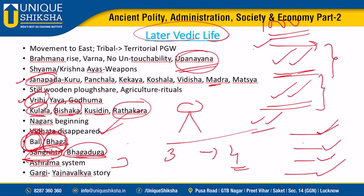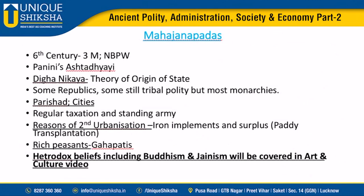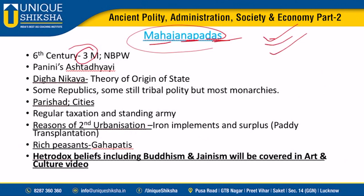Janapadas developed into full-fledged states with centralized power in the sixth century BC. Three M's emerged - monks, monarchs, and merchants. Merchants gave the second urbanization after the Indus Valley Civilization. Mahajanapadas emerged from earlier tribal localities and expanded their domains through warfare, diplomacy, and marriage alliances. Panini's Ashtadhyayi gives knowledge about this time period of Mahajanapadas.